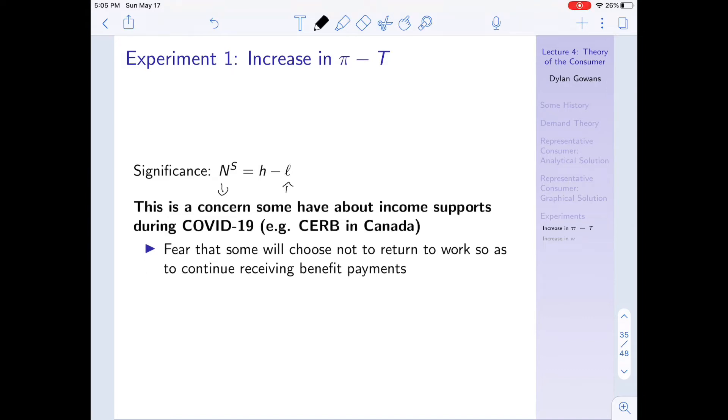And I have here, I wrote, this is a concern that some have about income supports during COVID-19. So for example, in Canada, we have the CERB. So these are supports that are paid to people who are no longer working because of COVID-19. And the fear is that even those that might be able to return to work won't, because they now have this additional non-wage income, these additional payments from the government, which you could think of as being a decrease in t. And so as a result, they're decreasing their labor supply. And so the fear is that even if these people could return to work, they won't.